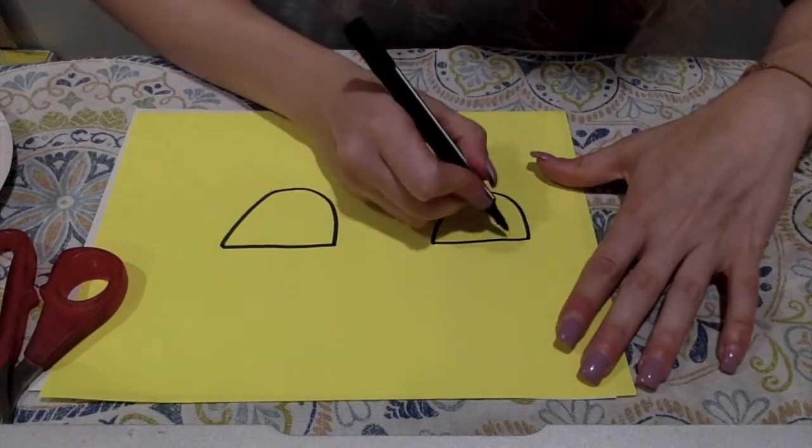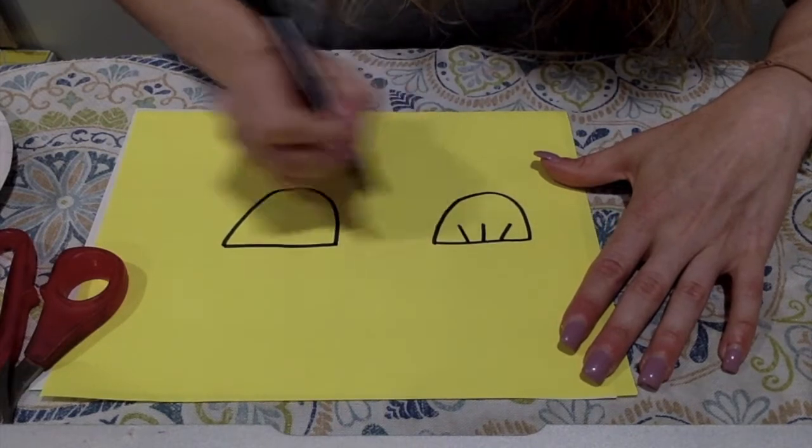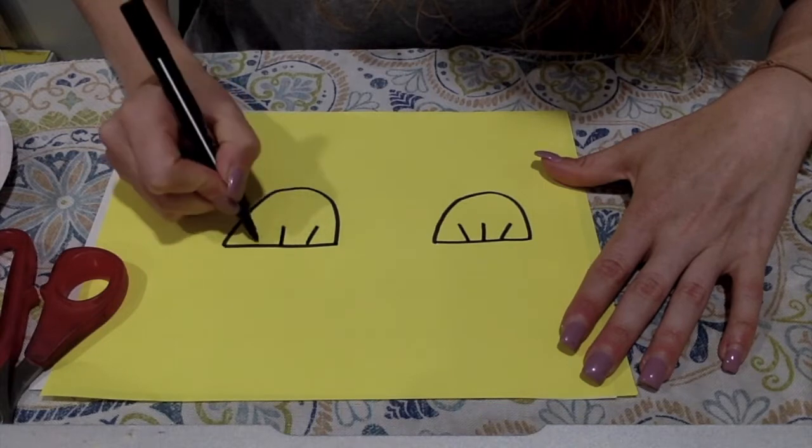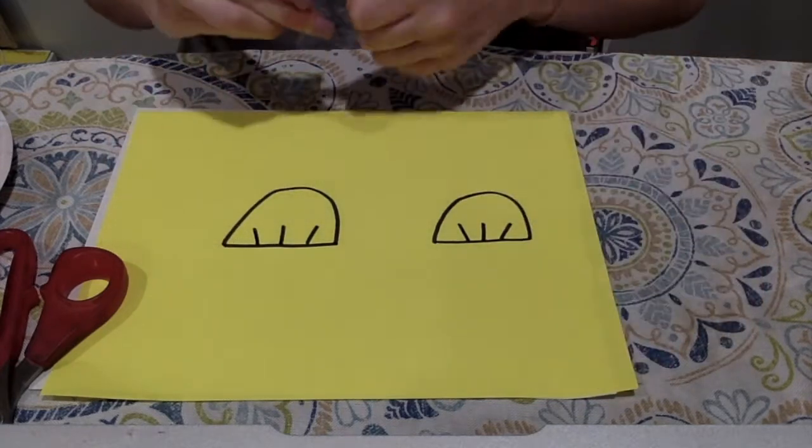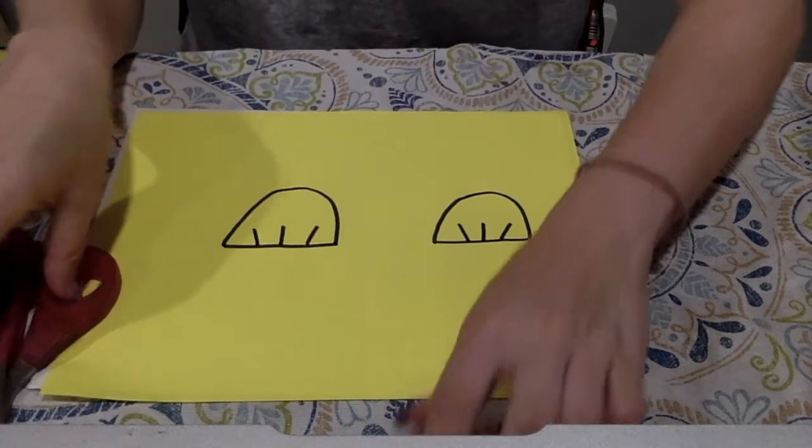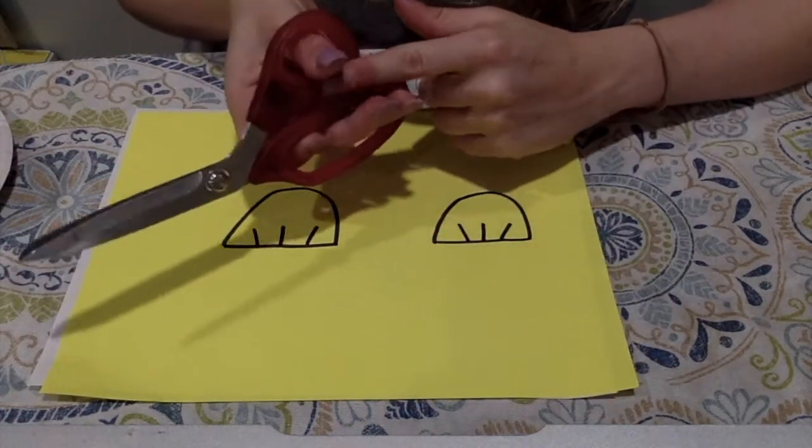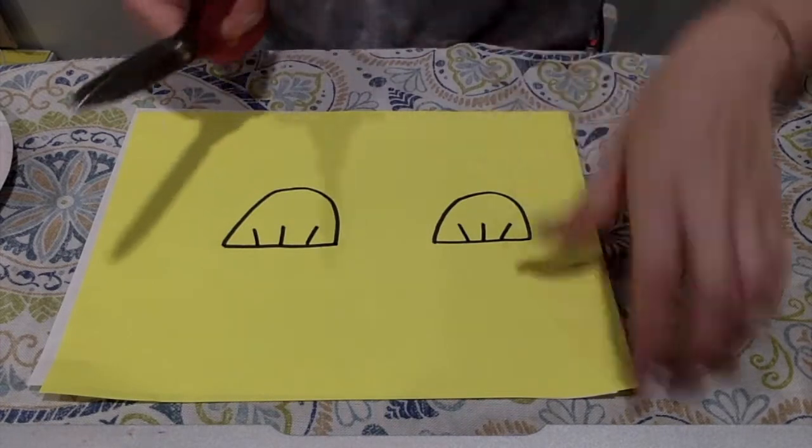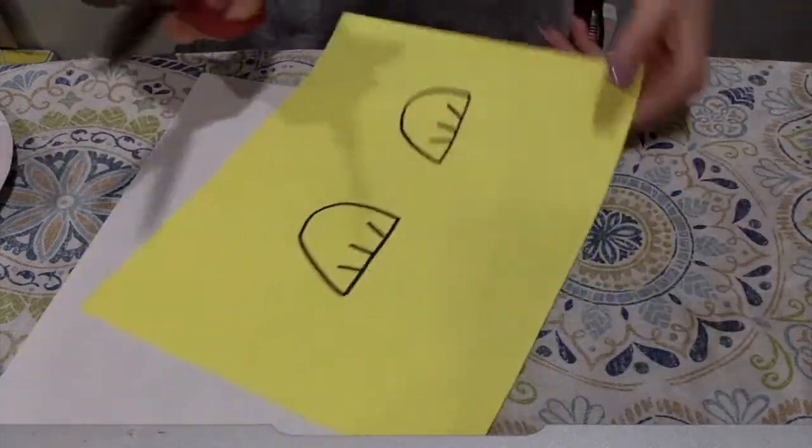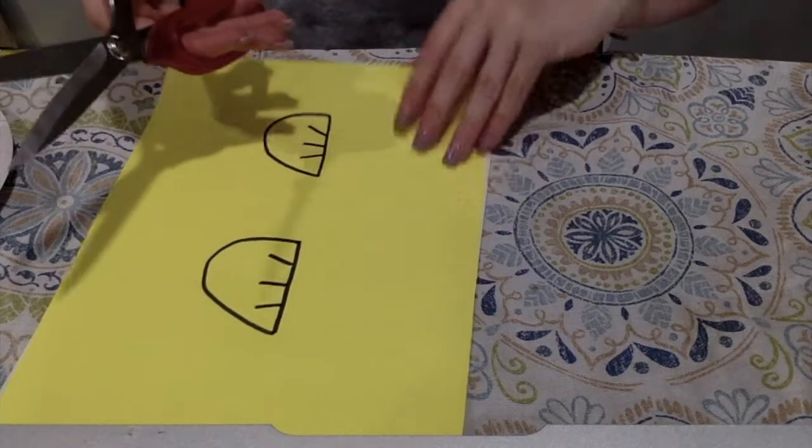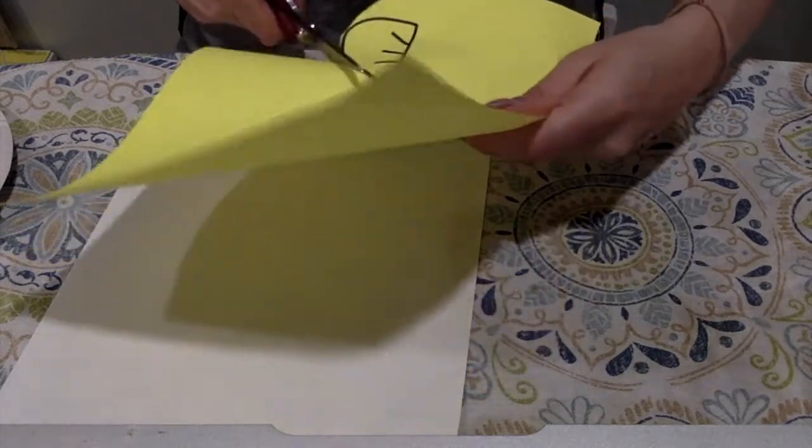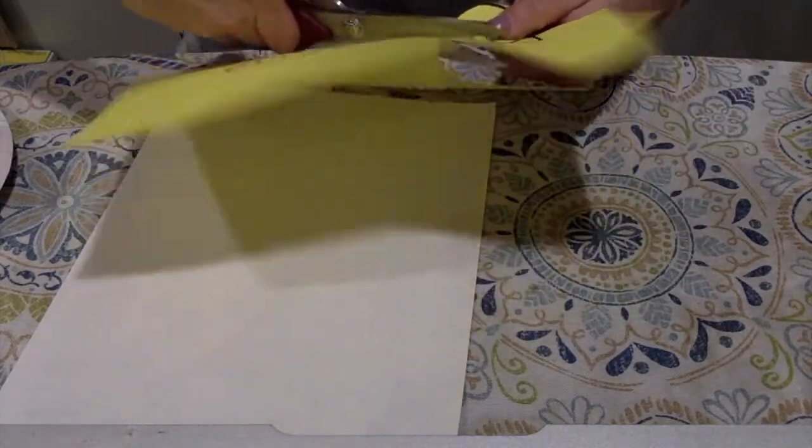And then we're going to go down here and just make three little diagonal lines. And these are going to be our fins for our puffer fish, so we can cut this out. When you're using scissors, you want to make sure you're using a thumbs up position and keep our arm close to our body. Our thumb always goes in the smaller hole and faces up, and we're using our helper hand to hold the paper. And we're just going to cut out our fins of our fish.